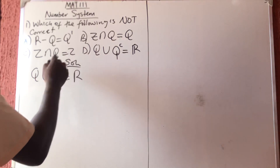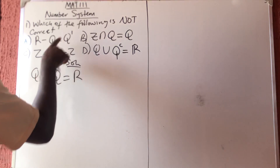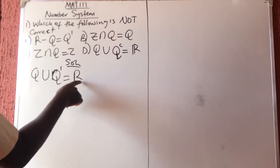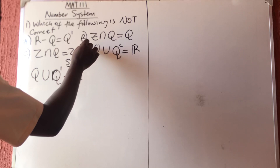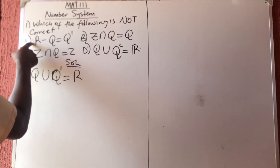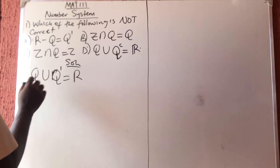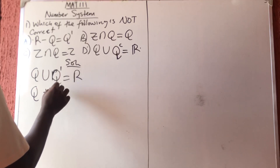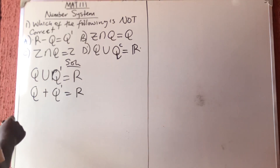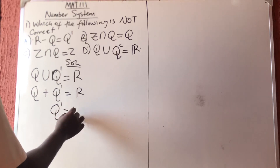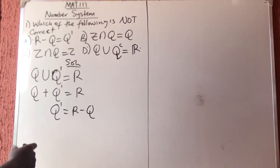So if you combine the rational and irrational numbers you get the real numbers — that means option A is correct. Also, union in mathematics means plus, so Q union Q complement equals R. If you make Q complement the subject of the formula, Q complement equals R minus Q. So options A and D are saying the same thing — both are correct.